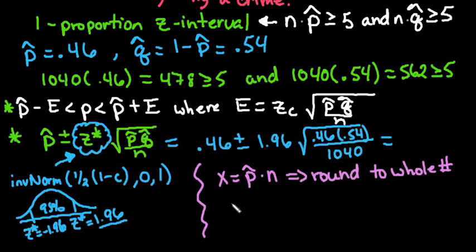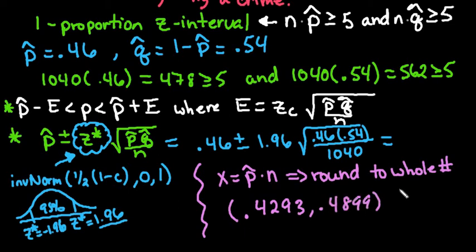So we would just round to however many places and basically we would report this as an interval. So I get 0.4293 up to 0.4899.